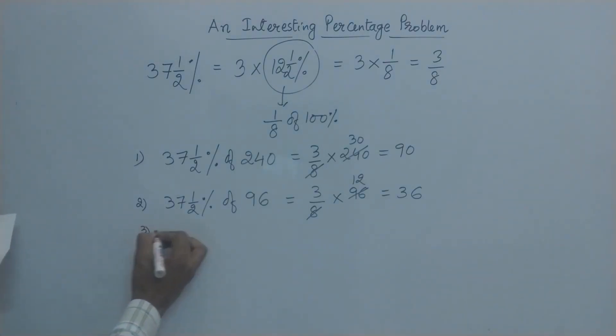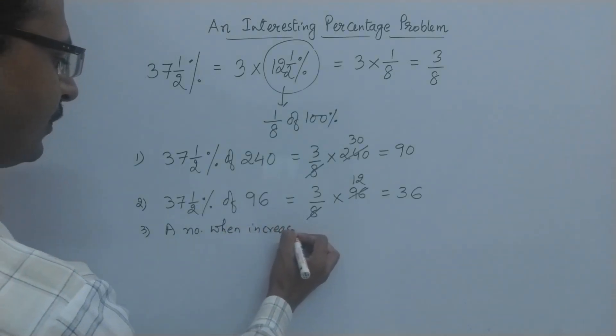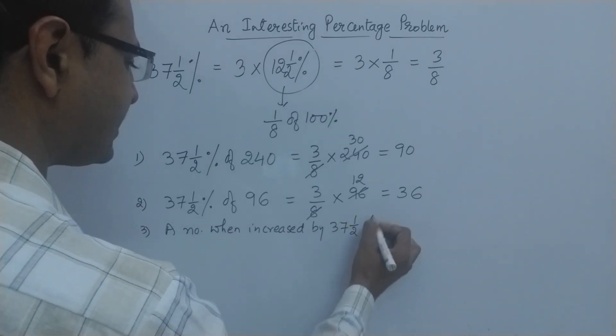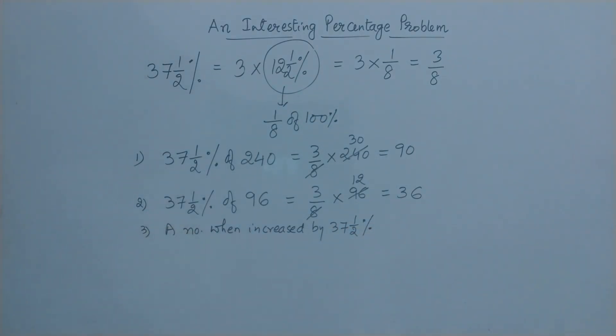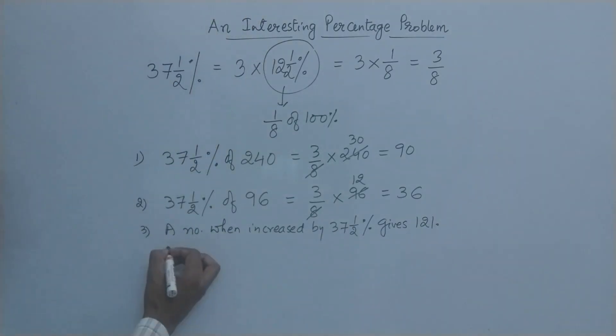This is a problem in which there is a number which is increased. A number when increased by 37.5% gives 121. So you need to find the number. Again, the problem is very easy if you can really convert 37.5% into fraction 3/8. So how do you solve this?